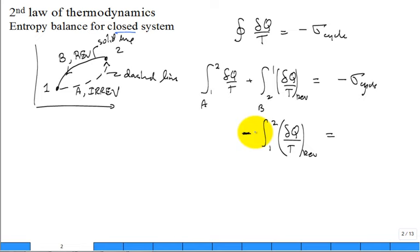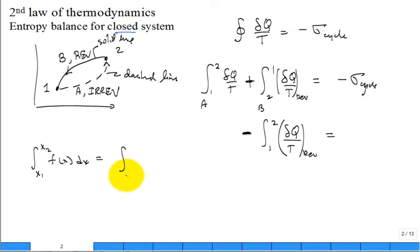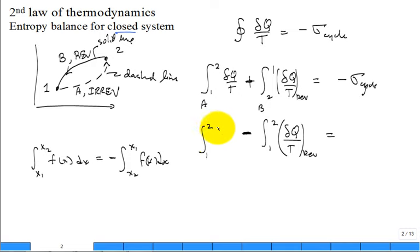Instead of saying plus, going from two to one along a reversible path, we turn it around and go from one to two along the same reversible path — and you have to put a minus sign. It's like in calculus: the integral from x1 to x2 of f(x)dx is the negative of the integral from x2 to x1 of f(x)dx. So we have the integral along path A from one to two of δQ over T equal to negative sigma of the cycle.